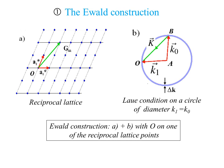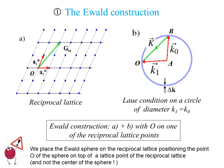To verify when the diffraction condition is satisfied, we take one point on the perimeter of the circle, which we call O, and fix it on the origin of the reciprocal lattice — the origin can be any point of the reciprocal lattice. The way to place the Ewald sphere on the reciprocal lattice is by putting one point of the perimeter on a point of the reciprocal lattice — not the center of the circle, which is a mistake sometimes made.